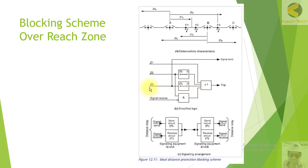Looking at the logic diagram: if the relay picks up in zone 3 — which is used as the reverse zone in this case, though it could be zone 4 or zone 5 depending on the relay — it sends a blocking signal to the remote end. In modern numerical relays, we have the feature to select any zone in the forward or reverse direction. If the relay picks up in the reverse zone, it immediately sends a blocking signal.